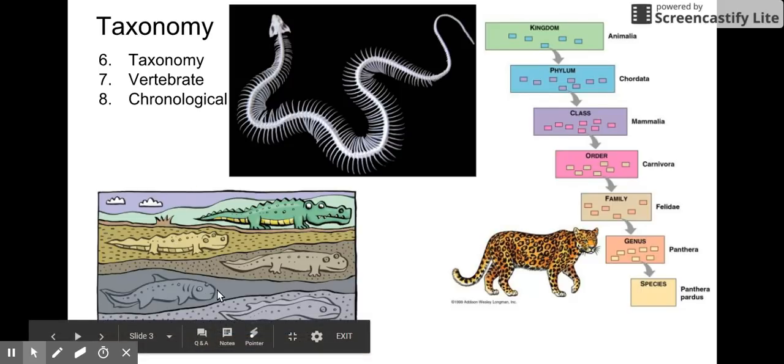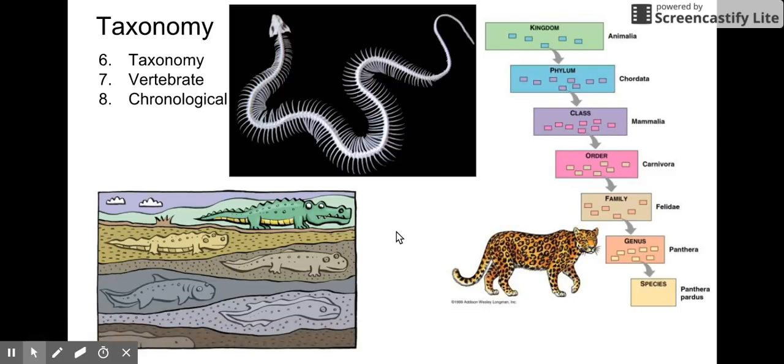Last, well, second to last, chronological just means that you're putting things in order from oldest to youngest. Just like relative age dating, putting things in chronological order.